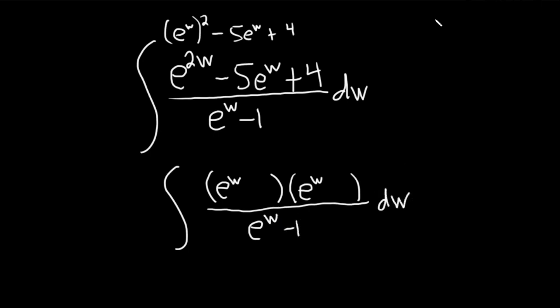And so we need two numbers that multiply to 4 but add to negative 5. So 1 and 4, but they should both be negative because they should add to negative 5. So minus 1, minus 4.